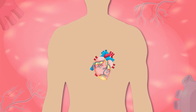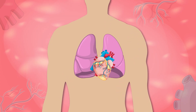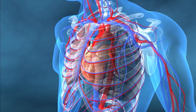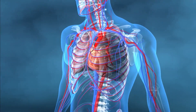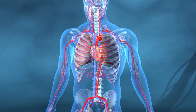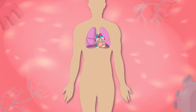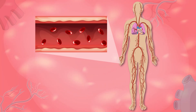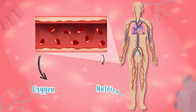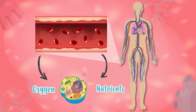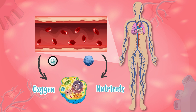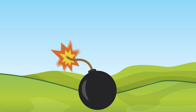The heart is the most special muscle we have. It's situated a little to the left from the center of our chest, between our lungs, and is in an oblique, diagonal position. It's very special because it sends blood all over our body — blood that delivers oxygen and nutrients we need to live to all of our cells.